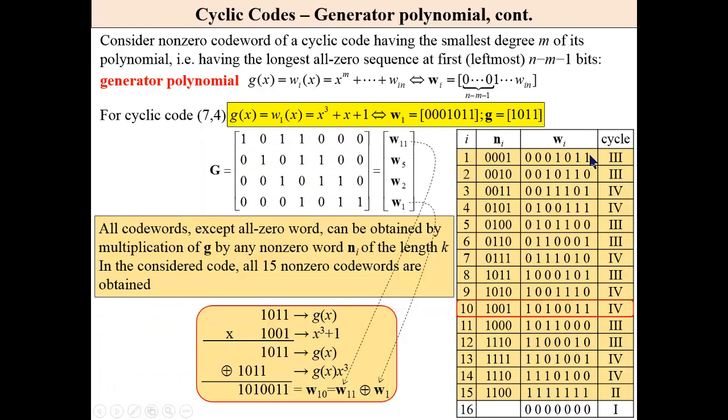In this table, we have all 16, well, 15 codewords. Sixteenth is all zero word. And then, all codewords, except all zero words, can be obtained by a multiplication of a generator polynomial by any non-zero word m sub i of the length k.